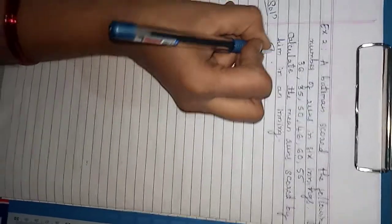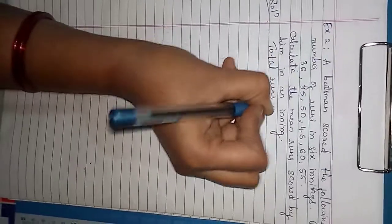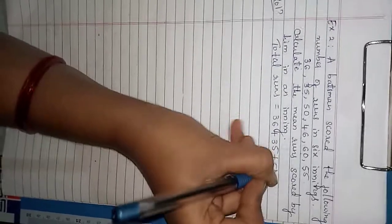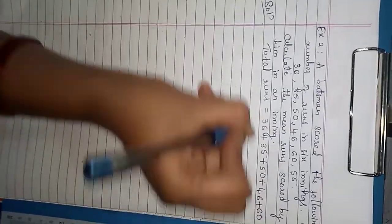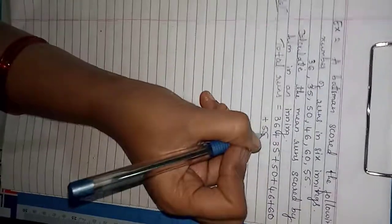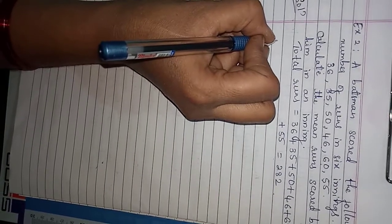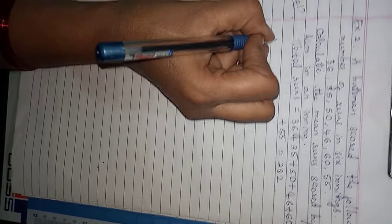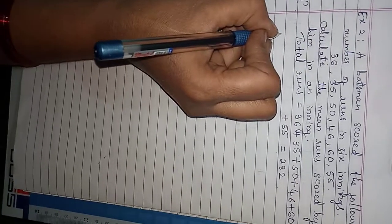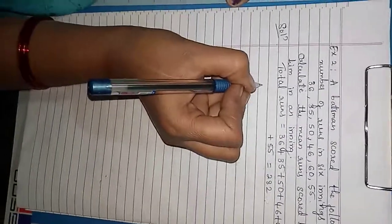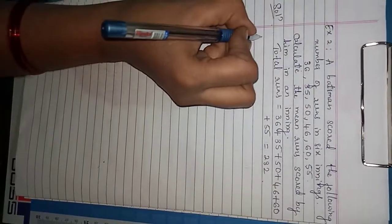First, find the total runs: 36 plus 35 plus 50 plus 46 plus 60 plus 55. Adding these gives 282. Now, to find the sum of all the observations and divide by the number of observations — here 6 innings, so number of observations is 6.